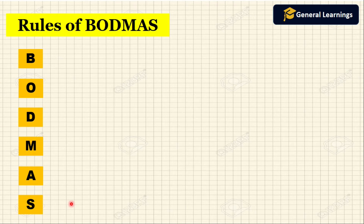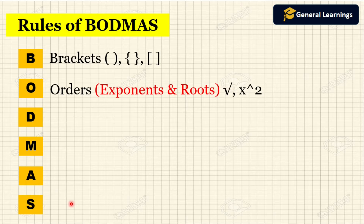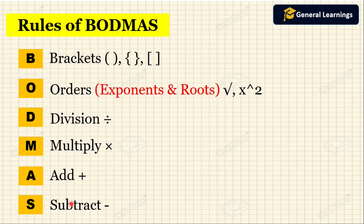So these are the rules of BODMAS: B is for Brackets, O means Orders (that means exponents and roots), D is Division, M is Multiplication, A is Addition, and S is Subtraction. These are the rules of BODMAS, and now we will solve questions using these rules.